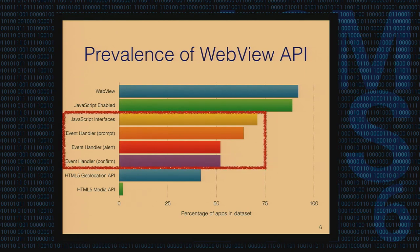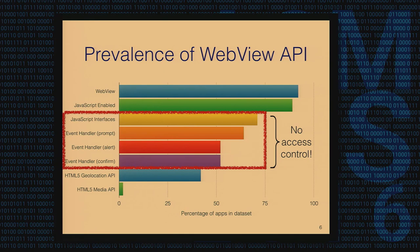Most applications — about 90% of them — also enable JavaScript. If you look at the JavaScript bridges, the JavaScript interfaces and event handlers: interfaces are used by about 70% of the apps, and more than 50% of the apps are using the event handler JavaScript bridges. You can't do access control because the origin information is not propagated through the bridge, so these are potentially vulnerable.